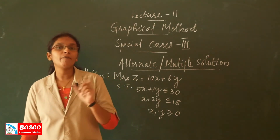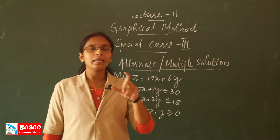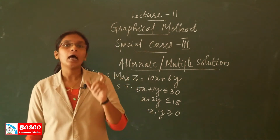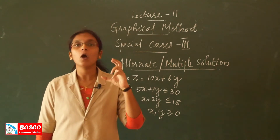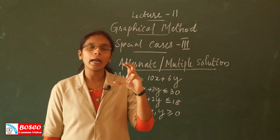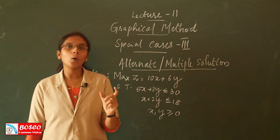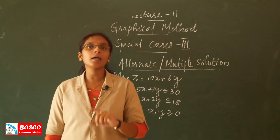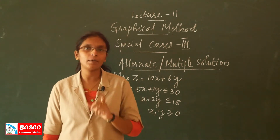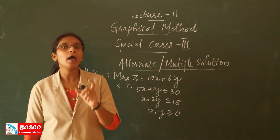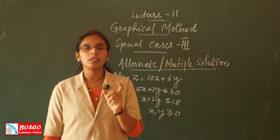We are discussing the graphical method. We are trying to calculate the solution and the feasible region, the boundary and the closed direction of the boundary, the extreme points, the coordinates, and the corresponding objective function value, which is the solution.